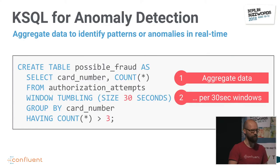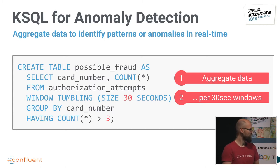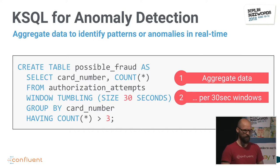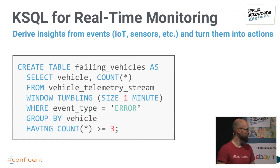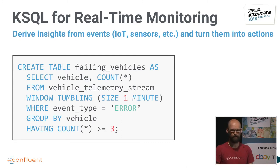Similarly, you can use it for anomaly detection. Here's a straightforward example that fits on one slide: we aggregate the raw input data, apply some heuristics or thresholding on the computed aggregates in real time, and then say — if more than X authorization attempts failed in a certain time period, something bad is going on and we want to alert and follow up. For people in the IoT space — connected cars, earthquake sensors, whatever — you can do the same thing: look at data in real time, aggregate it, and trigger actions.